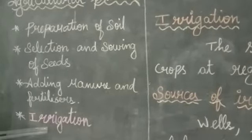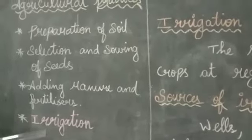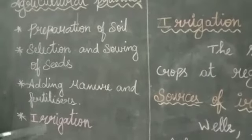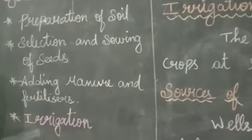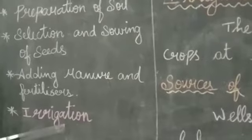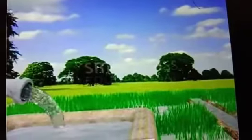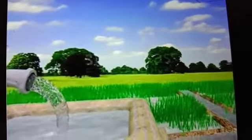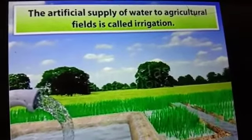Water is essential and important for proper growth and development of crops. We get water from two sources: naturally by rainfall, and by the artificial method of irrigation. Water is essential for proper cultivation of a crop.